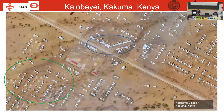Let's look at a few images. This is Kalobeyei camp in Kakuma, Turkana County, Kenya — in northwest rural Kenya. In the green circle we have the residential area; it's a relatively new camp, so it's well spatially designed and spaced out. In the blue circle we have the economic center — the local market.